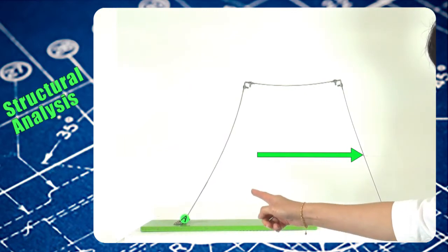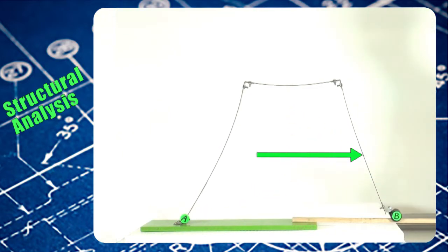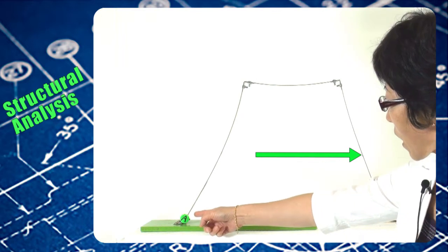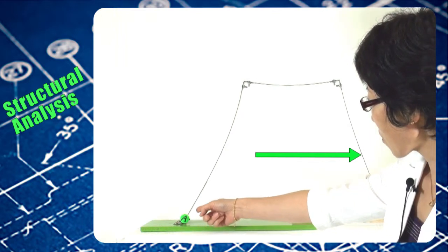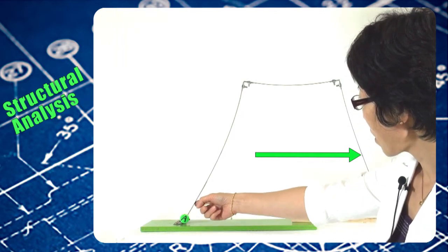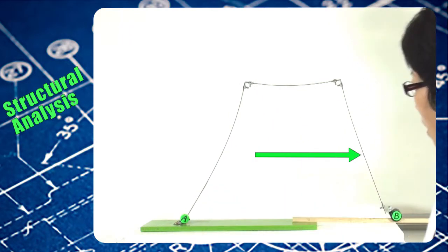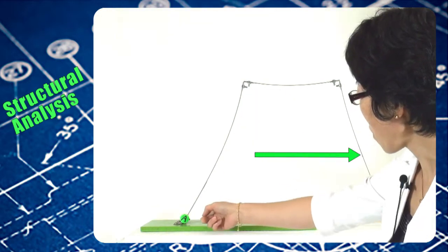Looking at the left-hand side column first: Point A is a hinge support, so rotation is permitted. Therefore, this column deforms into a single curvature with no contraflexure point along the column.